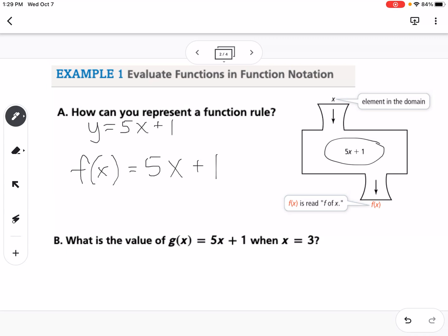And then it says, what's the value of g of x equals 5x plus 1 when x equals 3? You'll notice here we have f of x, here we have g of x, you might see h of x, you might see k of x. You can use different letters to represent functions. So when it's asking us when x equals 3, that means 3 is our input. So it's going to go in for the x into our function. So we would write this as g of 3 equals 5 times 3 plus 1. So what that means is that g of 3 equals 15 plus 1, which is 16. So the value of g of x equals 5x plus 1 when x is 3 is 16.